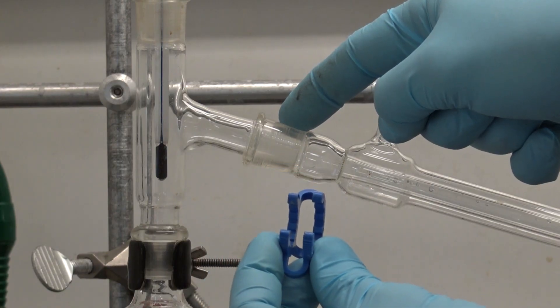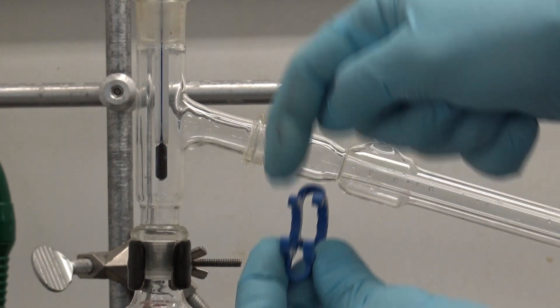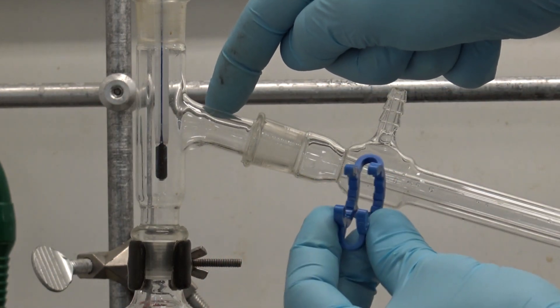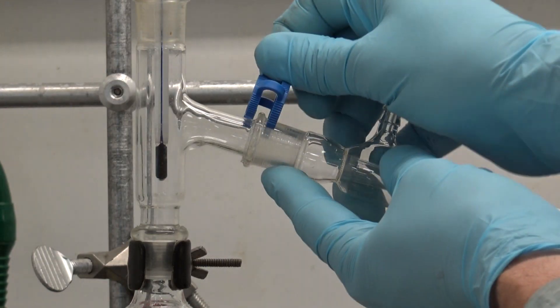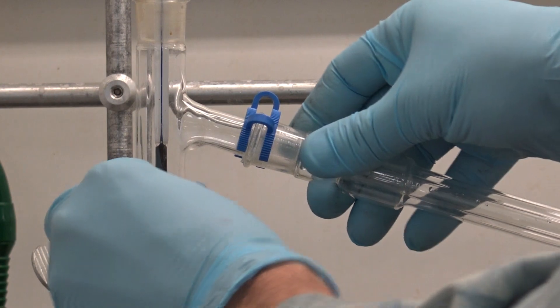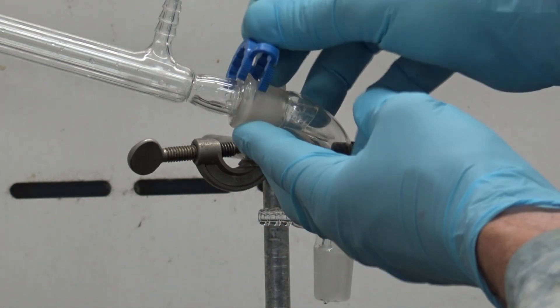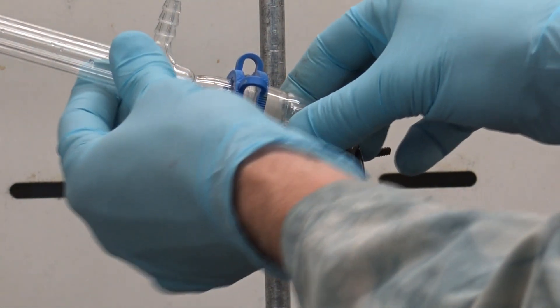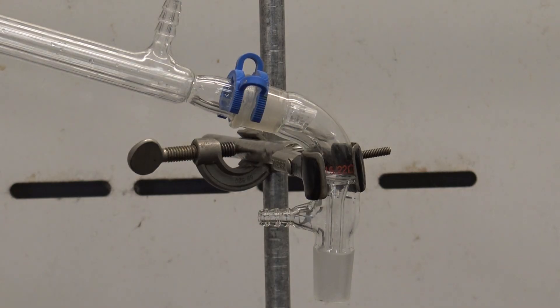Next I'm going to place a keck clip which has a large side and a small side just like the glass joint does right over that condenser. Notice that when I put the large side over the female and the small side over the male I get a good snug connection. I'll do the same thing at the other end to be sure that that condenser stays in place because it's not clamped itself.